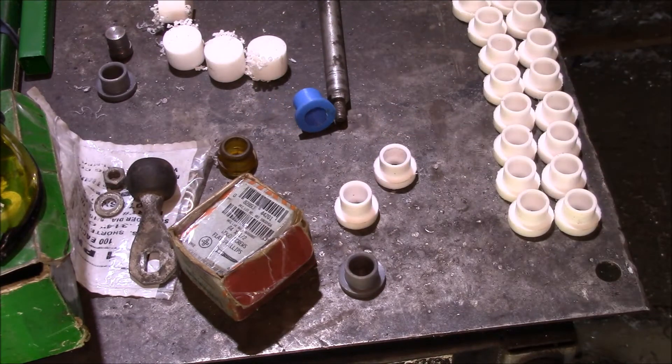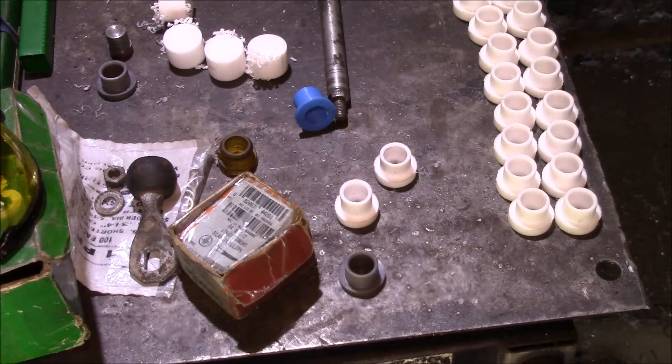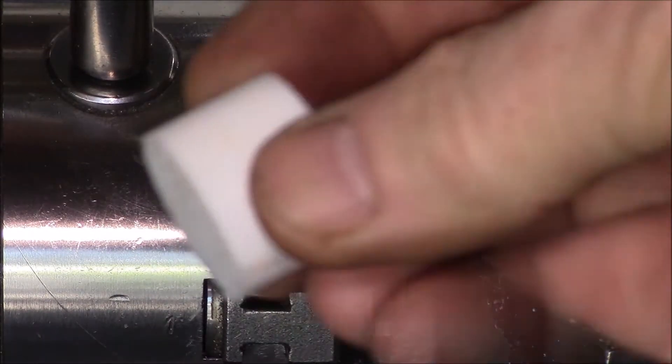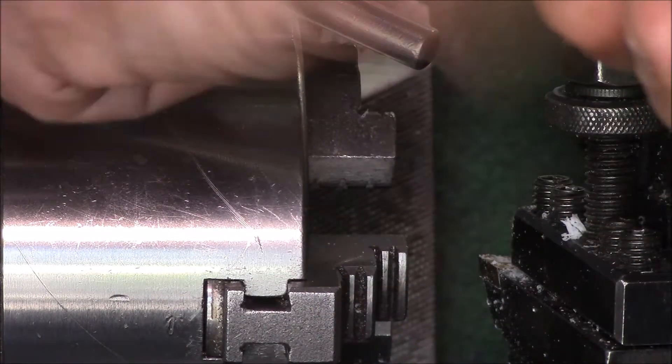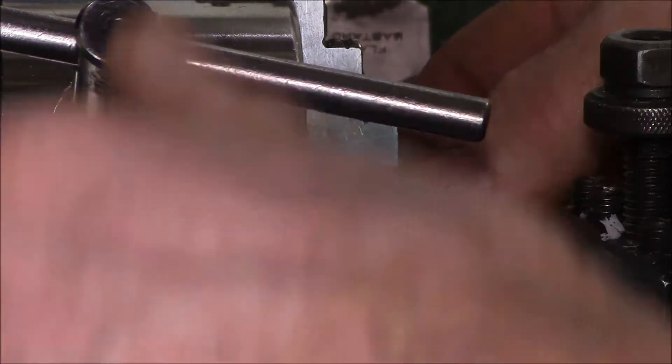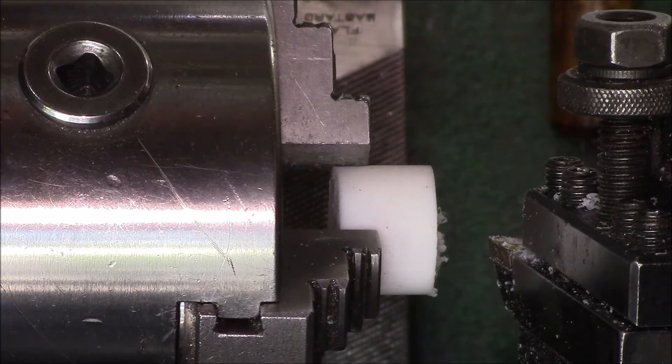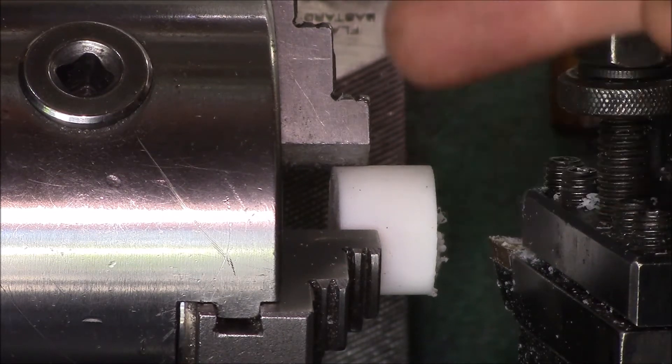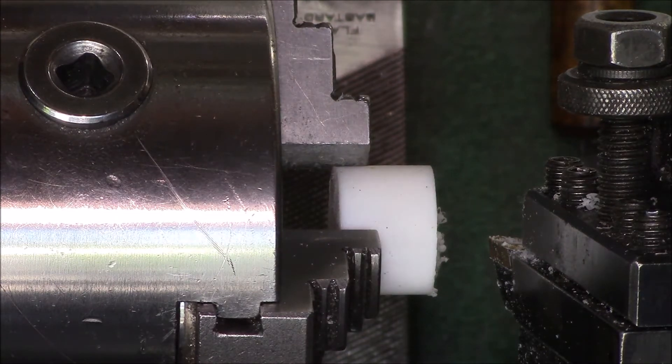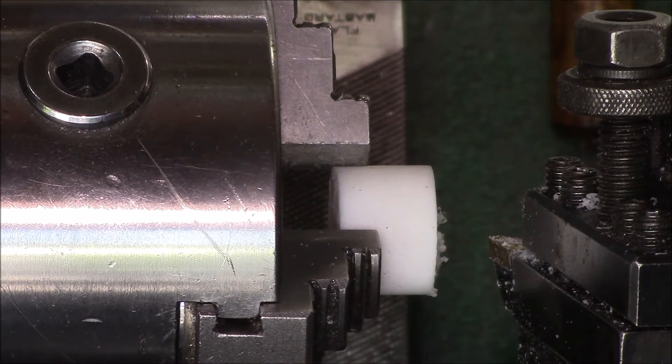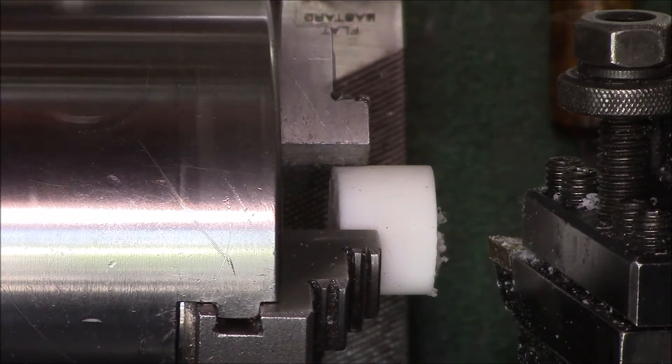What I have here is a blank of Teflon and we clamp that up here in the jaws. There's a lot of setup time with this cut. The cut itself doesn't take very long but there's a lot of time setting this up which I skipped over. Let's make the cut and then I'll show you what we do next.